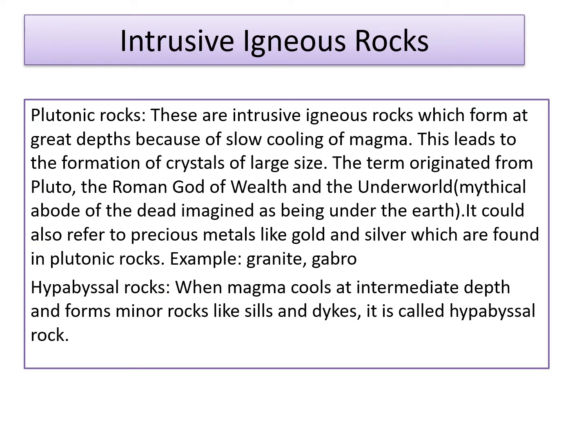Now let us understand what are plutonic rocks. Plutonic rocks are intrusive igneous rocks which form at great depths because of slow cooling of magma, leading to the formation of crystals of large size. The term originated from Pluto, the Roman god of wealth and the underworld. It could also refer to precious metals like gold and silver, which are found in plutonic rocks. Some examples of plutonic rocks are granite and gabbro. When magma cools at intermediate depth — neither at a very shallow depth nor very deep inside the earth — and forms minor rocks like sills and dikes, it is called hypabyssal rock.